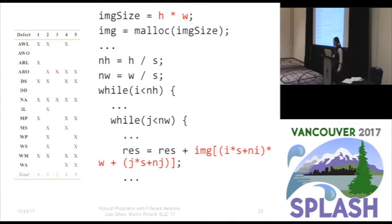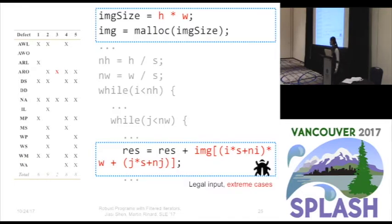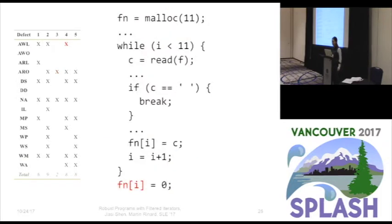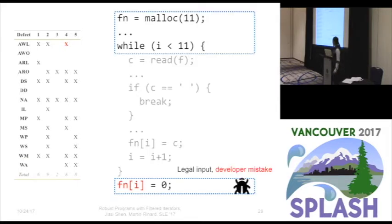Another bug allocates an array using the size h times w. If this result is too large and overflows the integer representation, it may become a small positive integer, and when the program uses a calculated expression to access the array, it may go beyond the actual size — triggered by legal input in extreme cases. A third bug may go right beyond the array: even though the developer made an effort to check the array bound during the loop, it still has the error after the loop. It's not so simple to write programs that can handle arbitrary inputs.